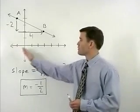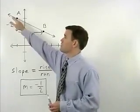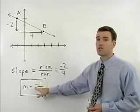If you read the graph from left to right and your line is going downhill like it is in this problem, then the slope must be negative.